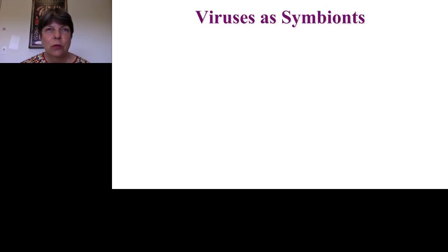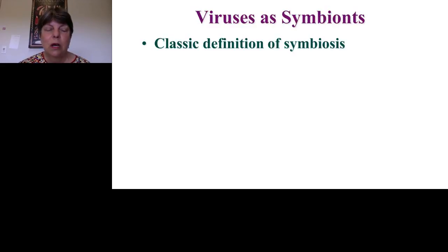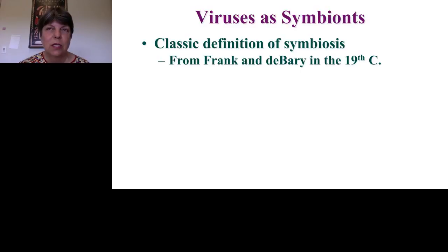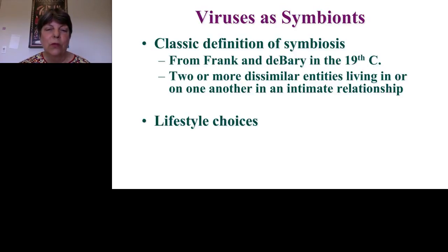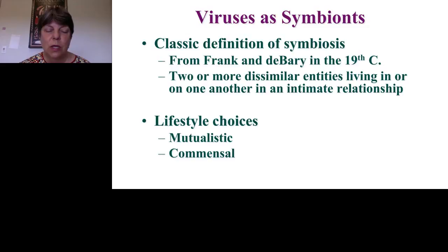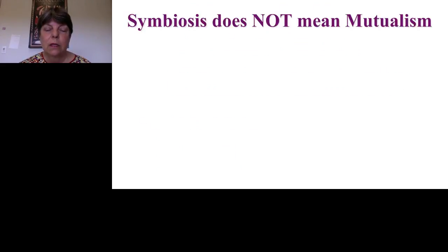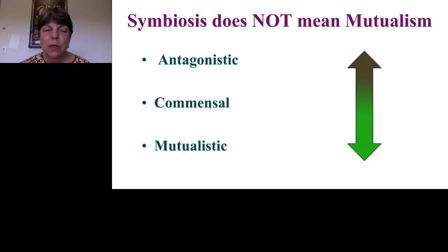I want to introduce the concept of viruses as symbionts. In our lab we use the classic definition of symbiosis coined in the 19th century when people discovered lichen — two dissimilar entities, an alga and a fungus, living together in an intimate relationship. If you are a symbiont, you have different lifestyle choices: you can be mutualistic, commensal, or antagonistic. People often confuse mutualism with symbiosis, but mutualism is just one kind of symbiosis.